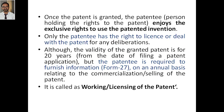Although the validity of the granted patent is 20 years from the date of filing the patent application, the patent is required to furnish information like Form Number 27 on an annual basis, relating to commercialization or selling of the patent. Every year there has to be a renewal, and in that you have to mention whether this product is commercialized or not, and which companies are having licenses to manufacture this product. This is called working or licensing of the patent — Form Number 27.